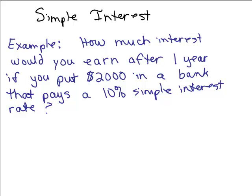This is an introduction to simple interest. Here's an example: how much interest would you earn after one year if you put $2,000 in a bank that pays a 10% simple interest rate? So what this means is you're putting $2,000 in the bank, and at the end of the year, 10% of that money is what you earn in interest.